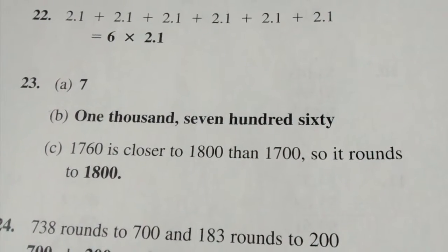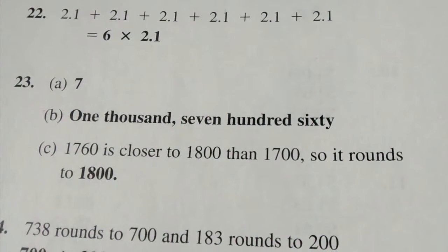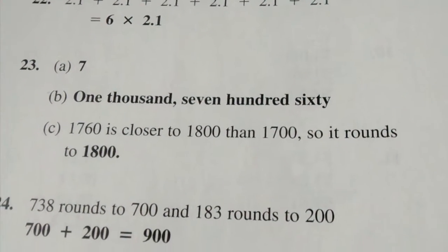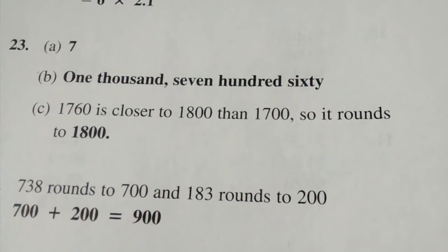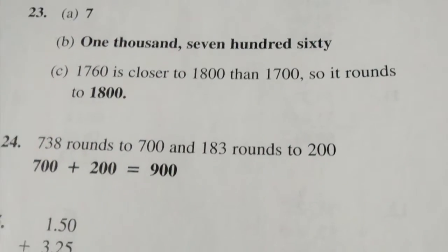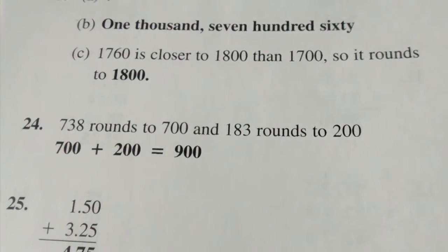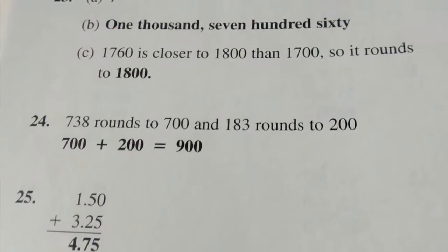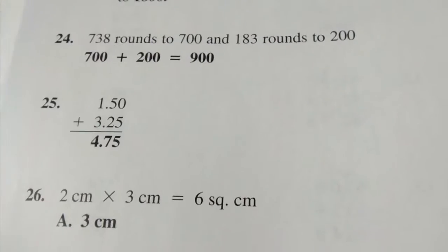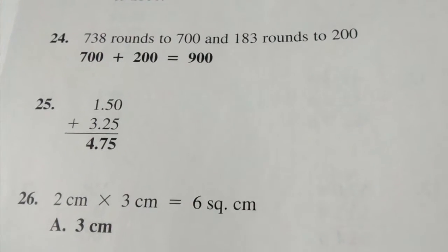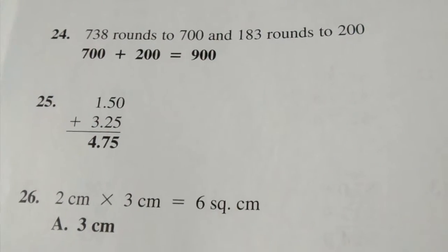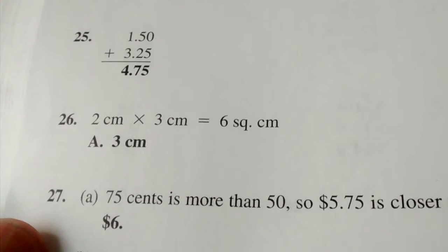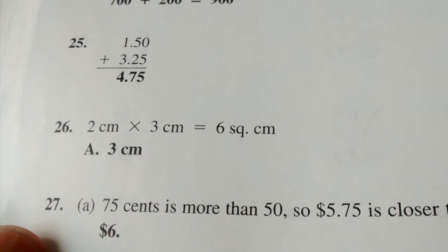Number twenty-three: A, seven; B, one thousand seven hundred sixty; C, one thousand eight hundred. Number twenty-four: seven hundred plus two hundred equals nine hundred. Number twenty-five: four and seventy-five hundredths.